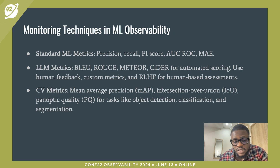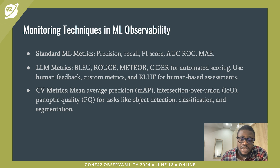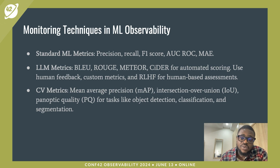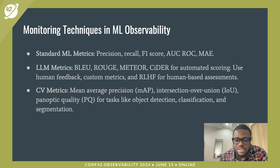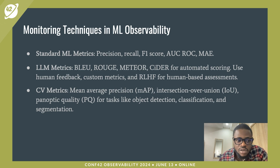Some monitoring techniques used in machine learning observability: standard ML metrics like recall, precision, F1 score, and MAE; large language model metrics like BLEU, METEOR, and CIDER for automated scoring, as well as human feedback, custom metrics, and RLHF for human-based assessment; and computer vision metrics like mean average precision, intersection over union, and panoptic quality for tasks like object detection, classification, and segmentation.